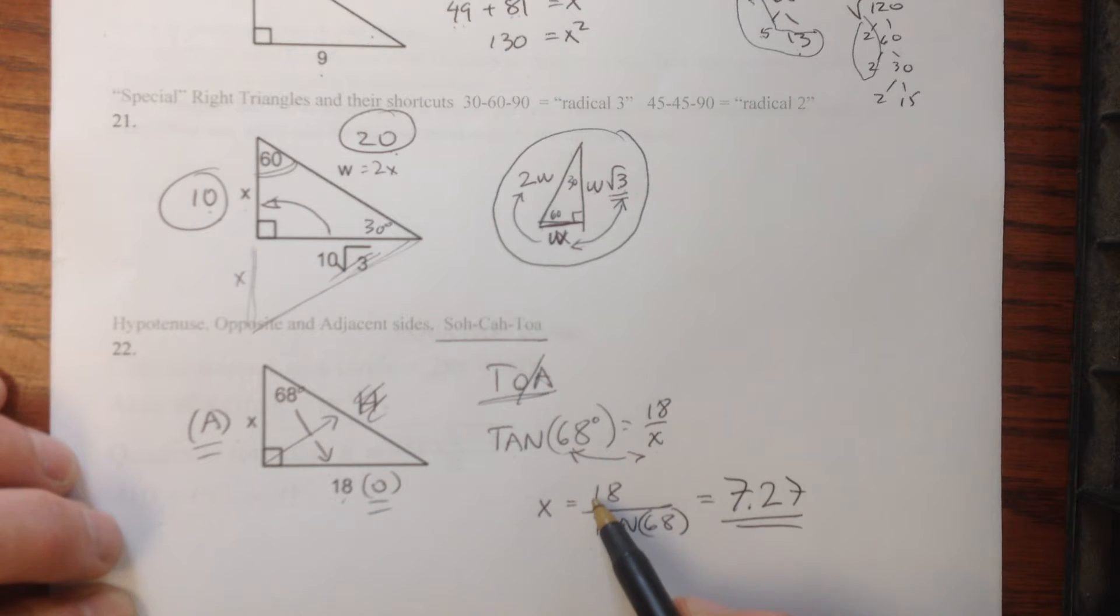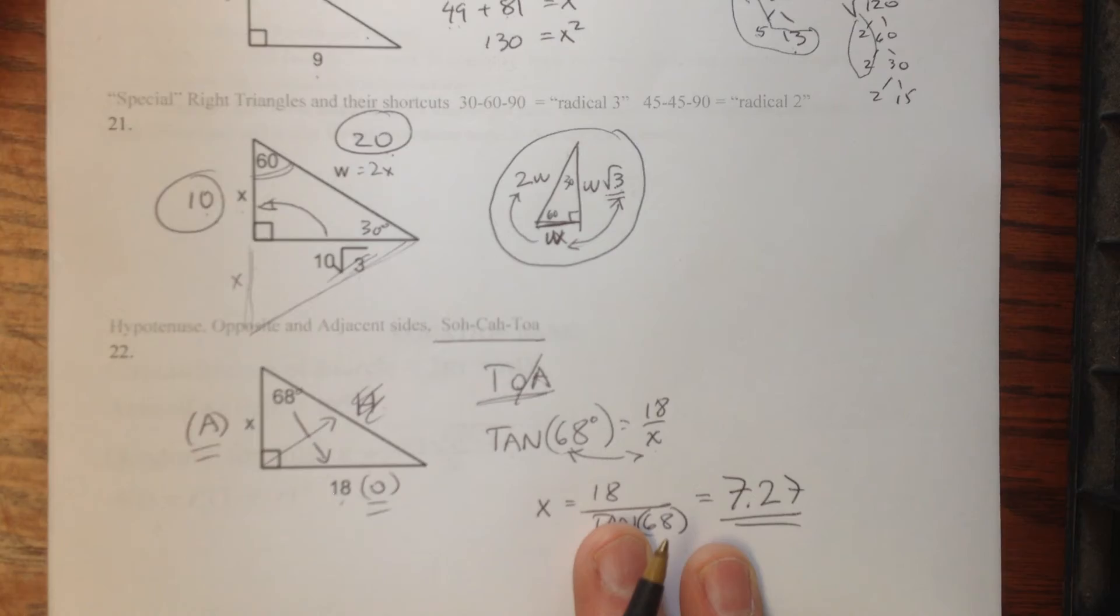and you just type into your calculator, 18 divided by the tangent of 68, make sure you're in degree mode, and I got 7.27 as my answer there.